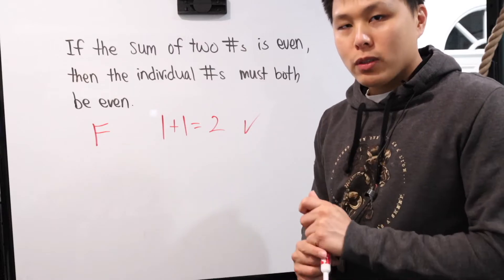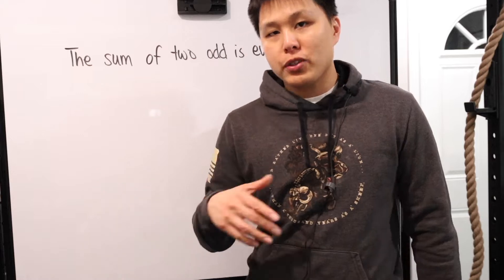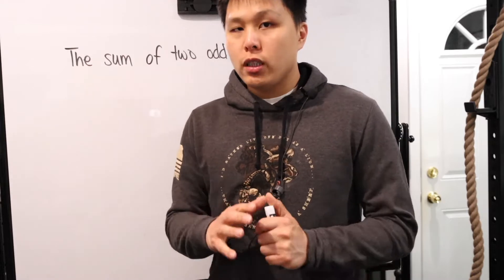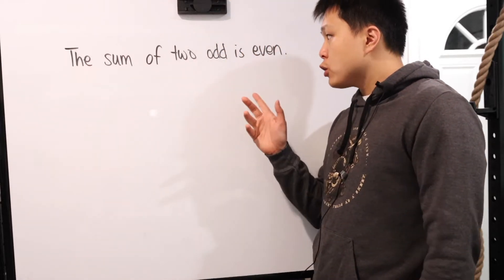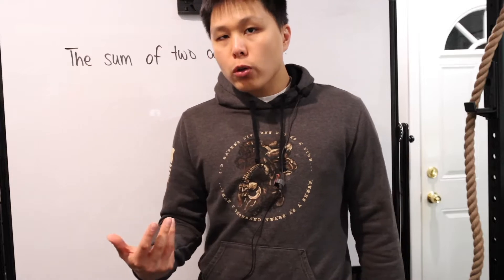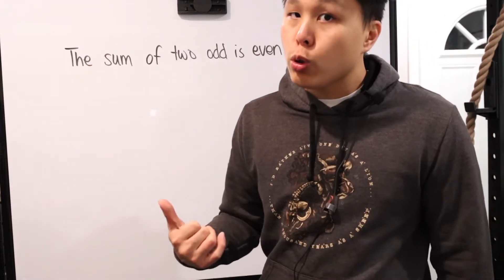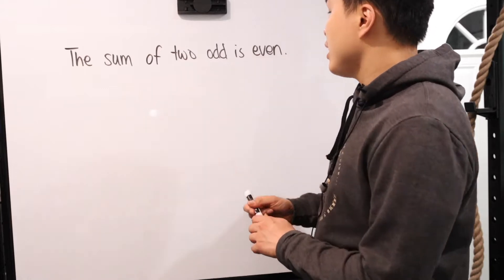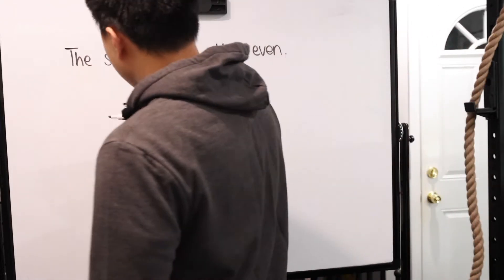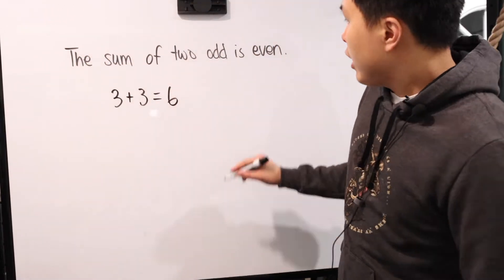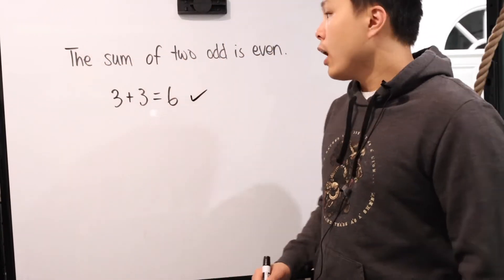Before I even continue with other examples that clearly will be false, so you guys can see how easy it is and wonderful it is when the statement is false, here's a common mistake when dealing with true and false. We have a statement right here: the sum of two odds is even. When it's false, all we have to do is provide one counter example, one example to show that it doesn't work. So the common mistake is that if this is true, all I have to do is show it's true by providing one example. So the sum of two odds is even. If that's the case, I say three plus three equals six, there you go. The sum of two odds is even. Check, right? No, not really.